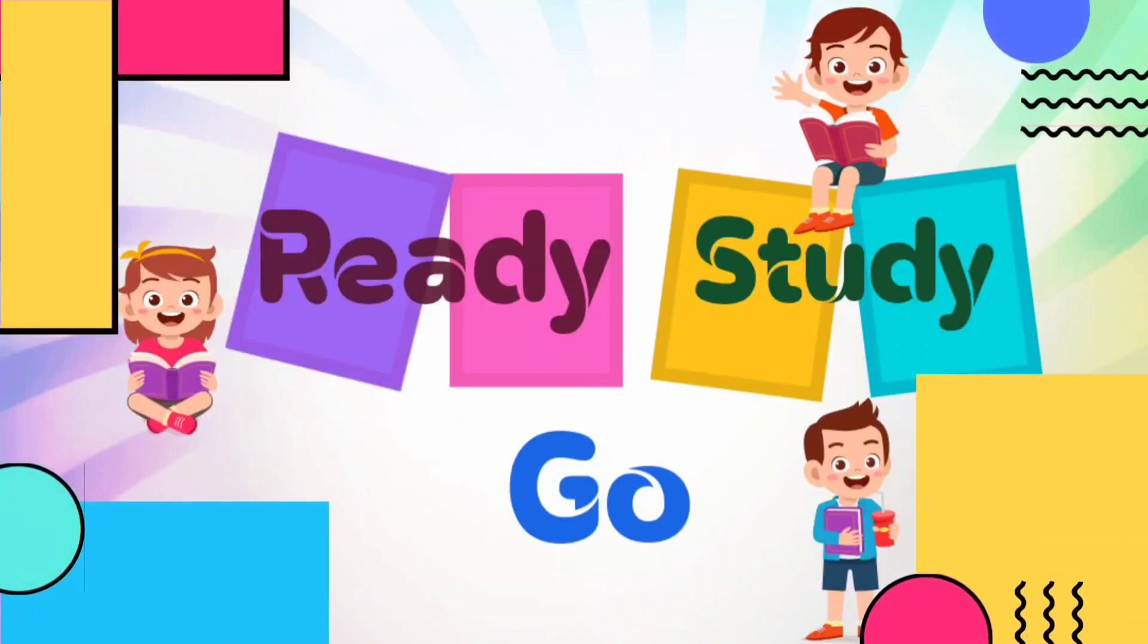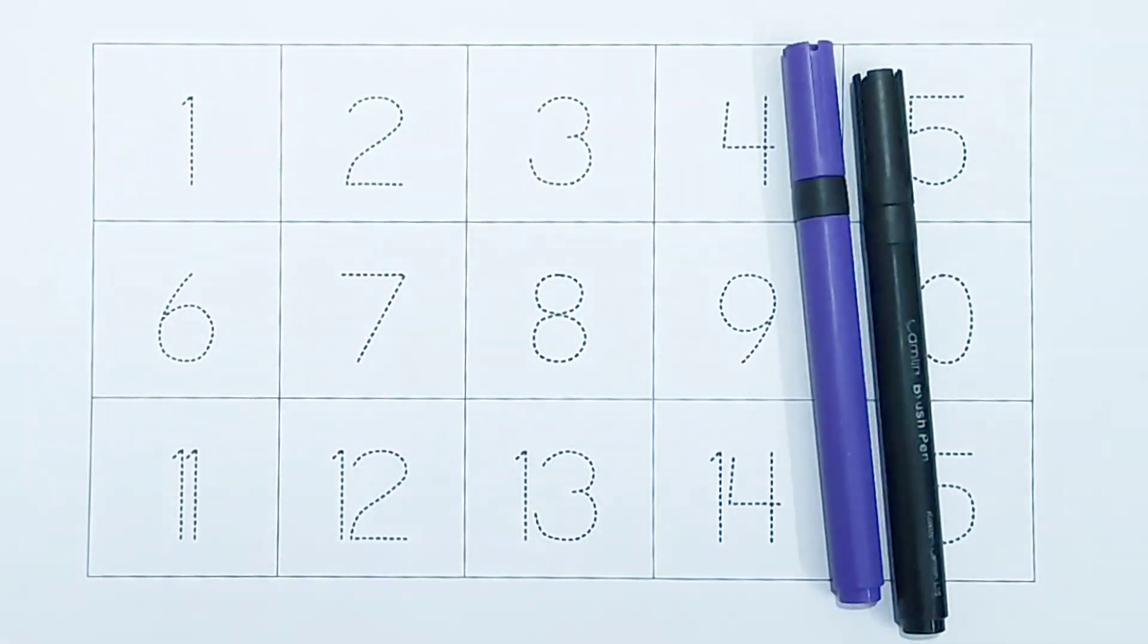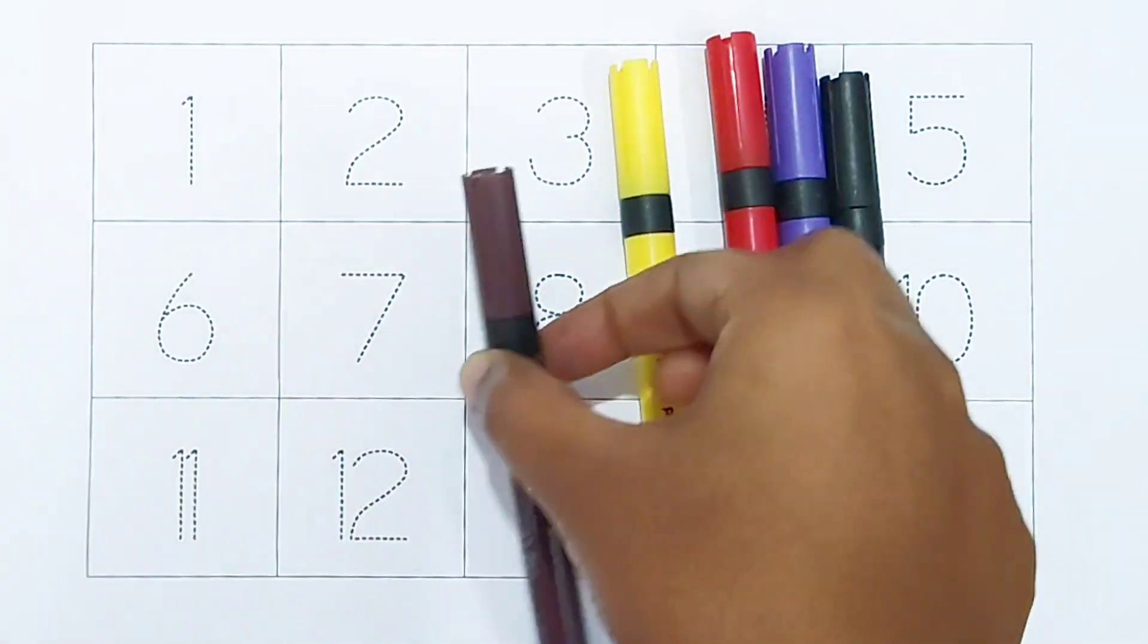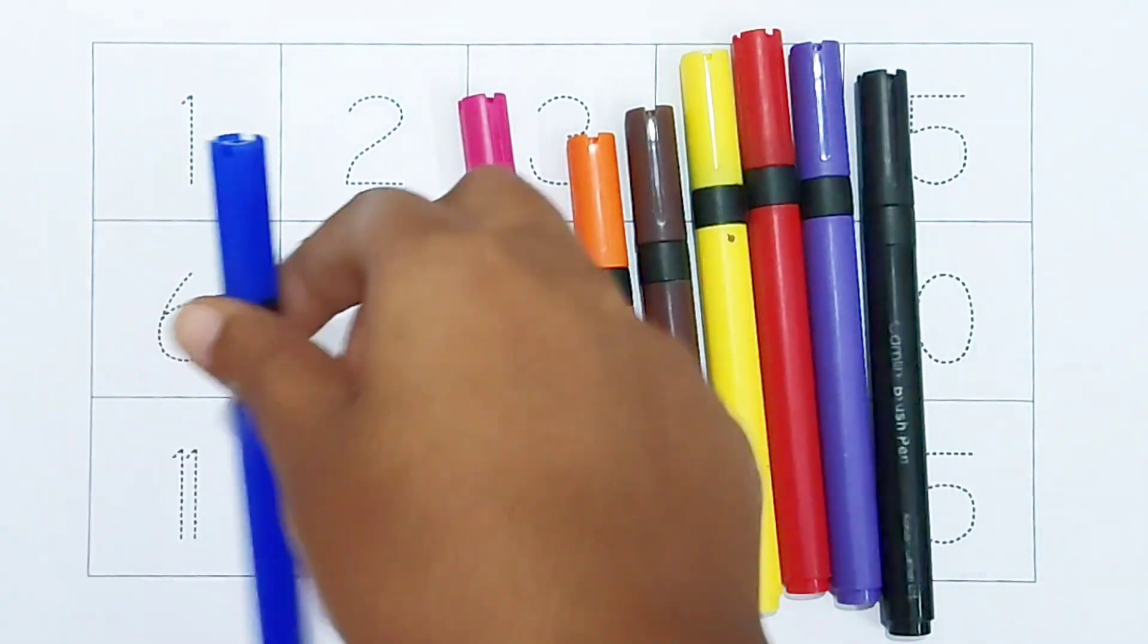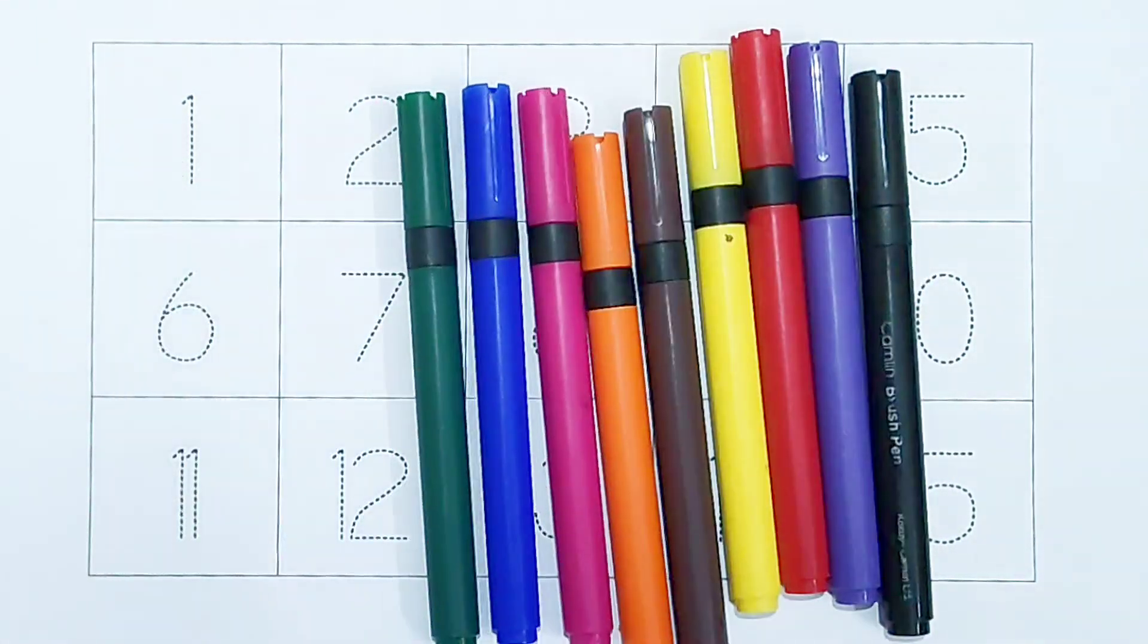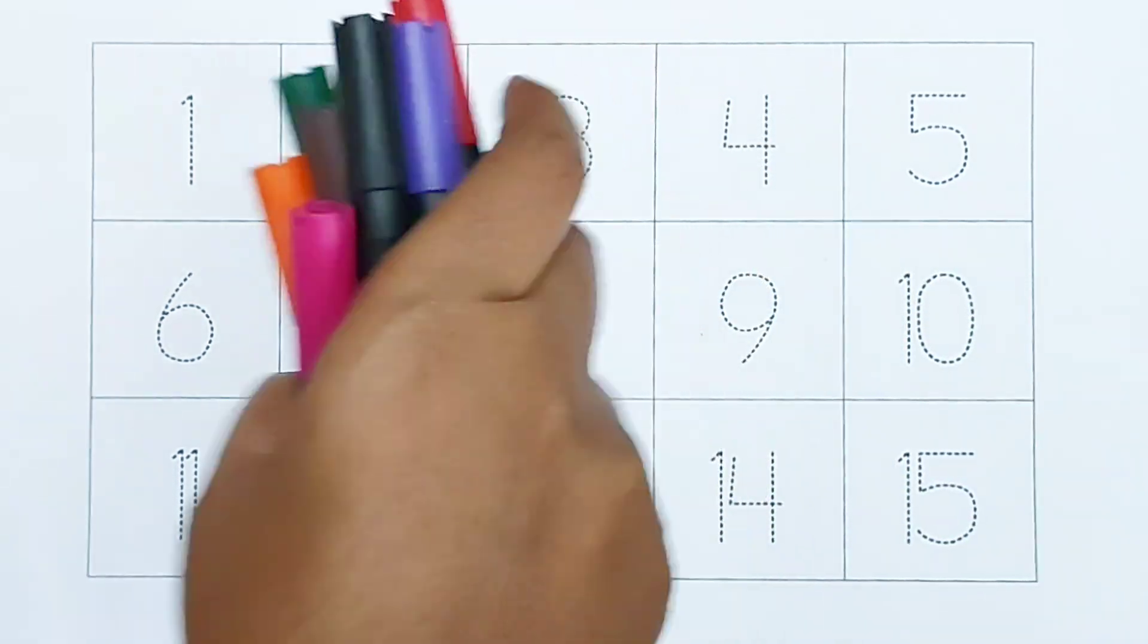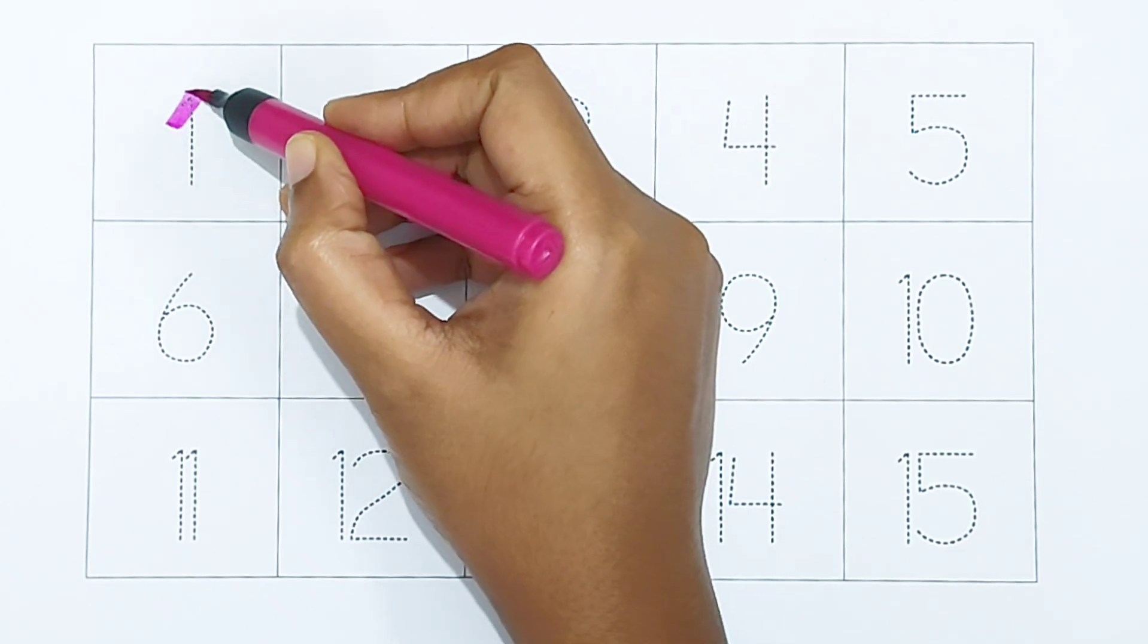Ready, study, go! Black color, white color, red color, yellow color, brown color, orange color, pink color, blue color, green color. Hi kids, today we can learn the numbers from 1 to 15. Let's begin. One, dark pink color.